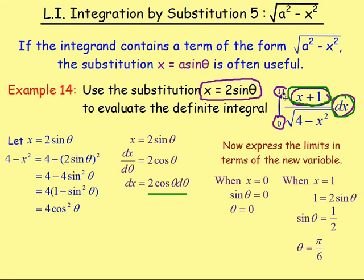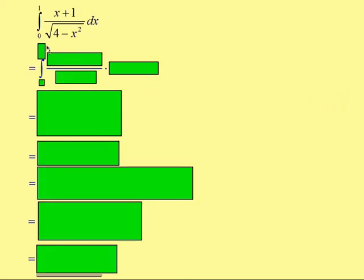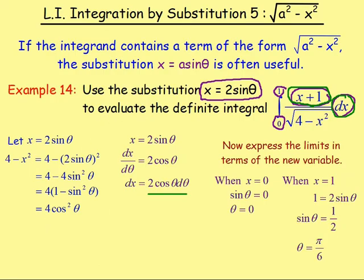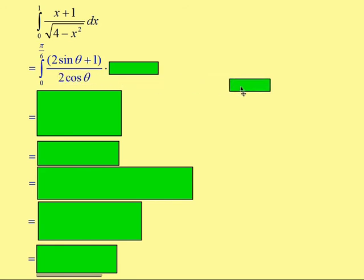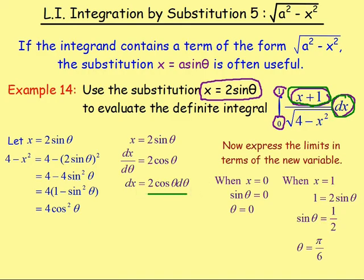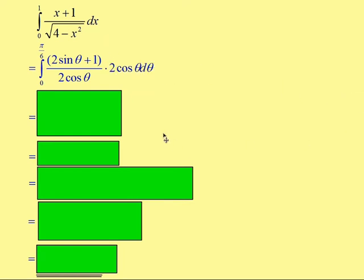We can now rewrite the full integral in terms of theta. The limits are 0 and π/6. The square root of 4 minus x squared becomes 2 cos theta. dx becomes 2 cos theta dθ, and x plus 1 becomes 2 sine theta plus 1. We are dividing by 2 cos theta and multiplying by 2 cos theta, so they cancel out.